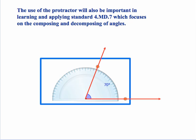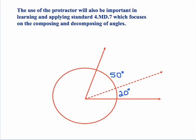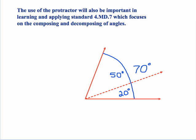The use of the protractor will also be important in learning and applying standard 4MD7 which focuses on the composing and decomposing of angles. So for example this 70 degree angle can be split up into other smaller angles. So for example we could draw this second ray here starting at the vertex and then if we measure this it looks like it's about 20 degrees. So we have split this up to where we have a 20 degree angle here and a 50 degree angle here and then of course together they would constitute the original 70 degree angle. So again you can compose and decompose angles just like you can compose and decompose numbers.